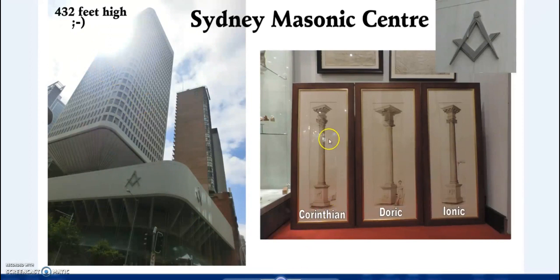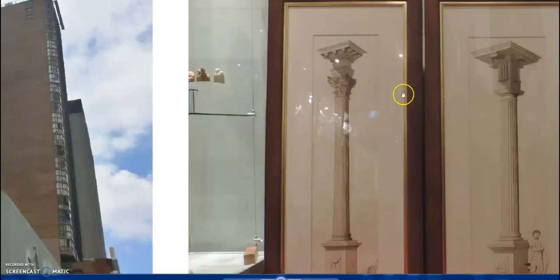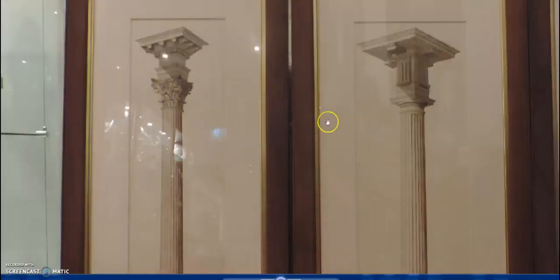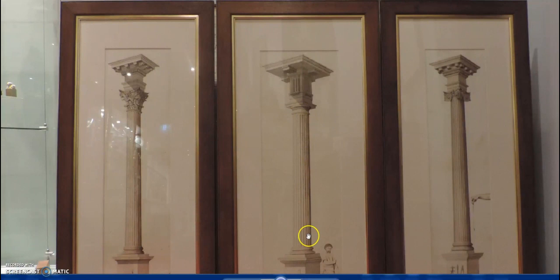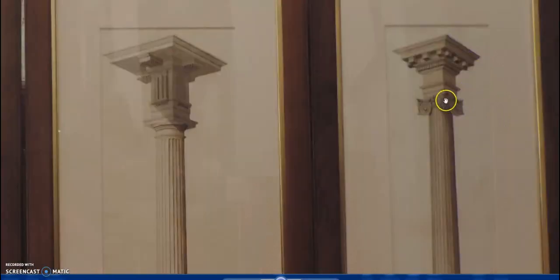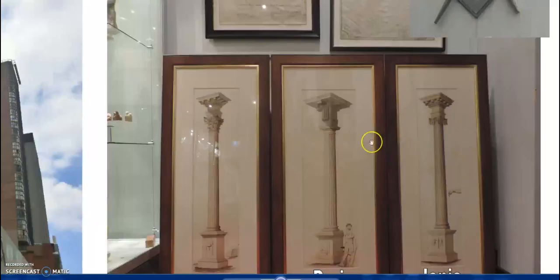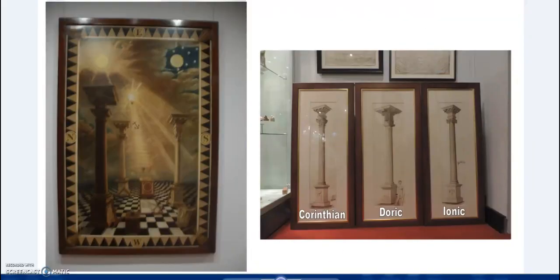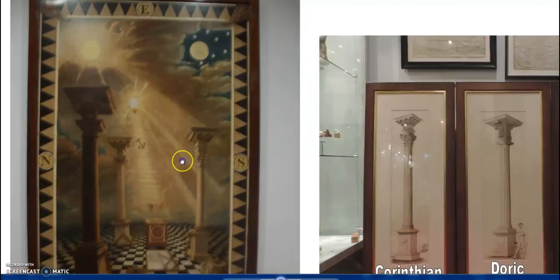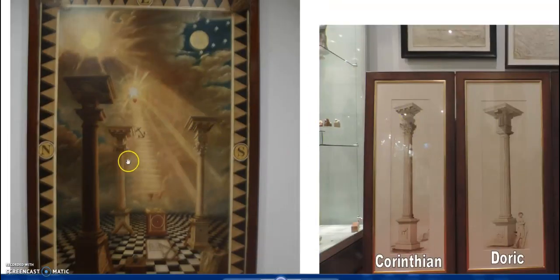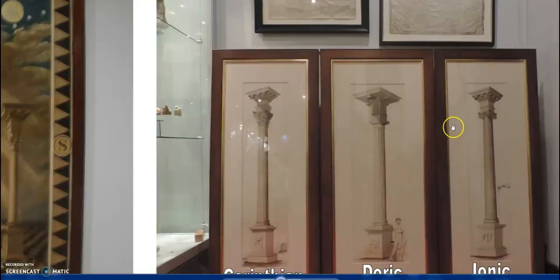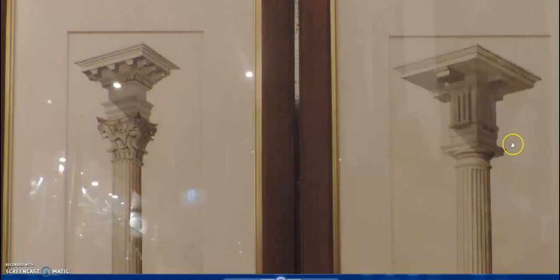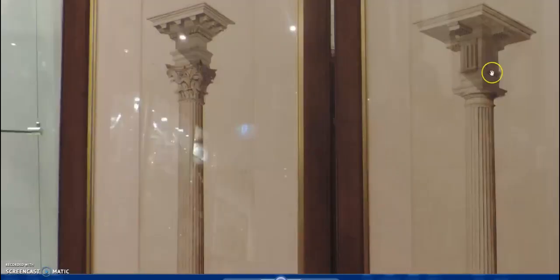What we have in these three columns are the three Greek orders of architecture: the Corinthian with the acanthus leaves; the Doric, the simplest of these forms; and the Ionic column with its swirls. They carry information and a long ancient tradition. In the museum city we also have this tracing board showing the same thing — the Corinthian column, the Ionic column, and the Doric column with the triglyph, which is also an important feature.